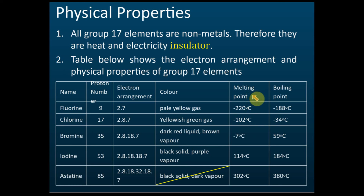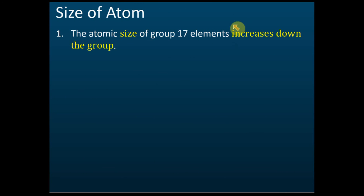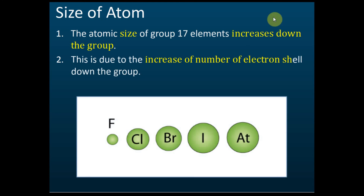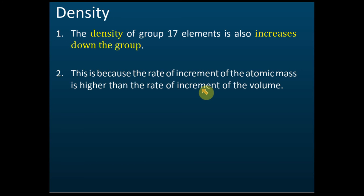The melting point and boiling point increase down the group, from fluorine to astatine. The size of the atom also increases down the group, and this is due to the increasing number of electron shells — two shells, three shells, four, five, six — so as the number of shells increases, the size of the atoms increases.